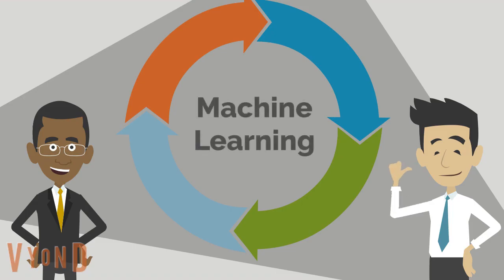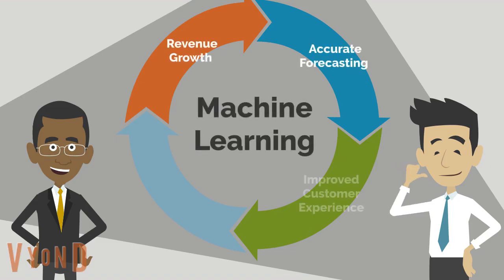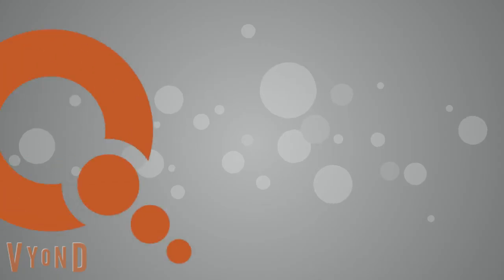The ultimate goal of machine learning is to produce revenue growth more efficiently and forecast more accurately. In the world of retail banking, it also has the power to enhance the overall customer experience with just-in-time communication and a personal touch.